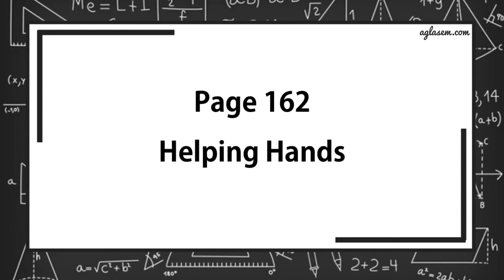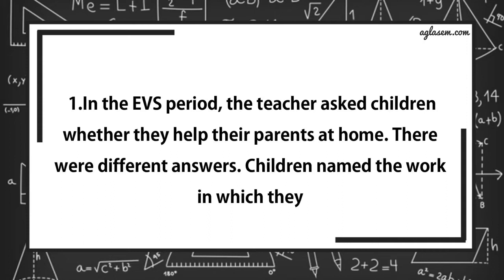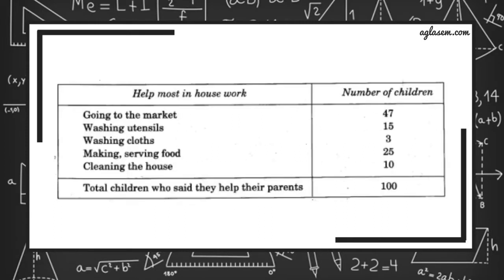Now, turn to page number 162. Helping hands. In the EVS period, the teacher asked children whether they helped their parents at home. There were different answers. Children named the work in which they helped their parents the most. The teacher collected their answers and made a table. Here is the table. Going to the market, 47 children. Washing utensils, 15 children. Washing clothes, 3 children. Making food, 25 children. Cleaning the house, 10 children. So, total children who said they helped their parents are 100.